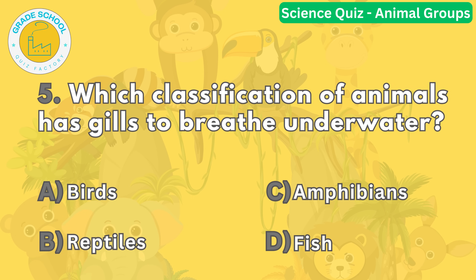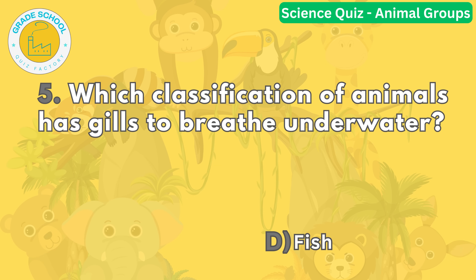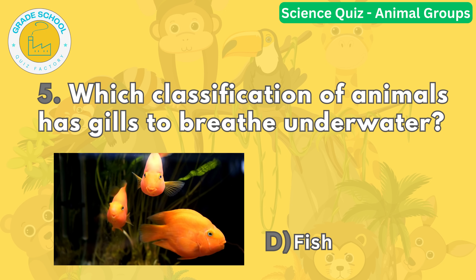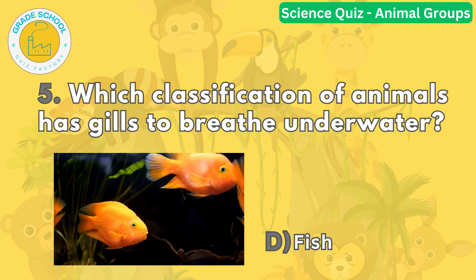Question number five. Which classification of animals has gills to breathe underwater? The correct answer is letter D. Fish have gills that allow them to extract oxygen from water. This adaptation enables them to live and breathe underwater.